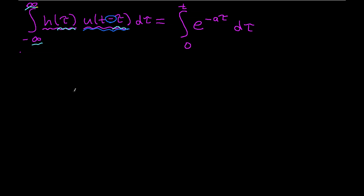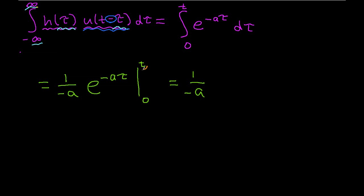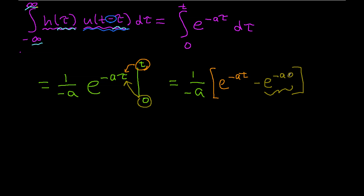Since I'm integrating an exponential, I'll end up with 1 over the constant in the exponential — in this case, minus a. Then e to the minus a tau evaluated between 0 and t. The upper limit t gives e to the minus a t, and the lower limit 0 gives e to the minus a times 0, which is 1. So I can rewrite this as 1 over a times the quantity 1 minus e to the minus a t.